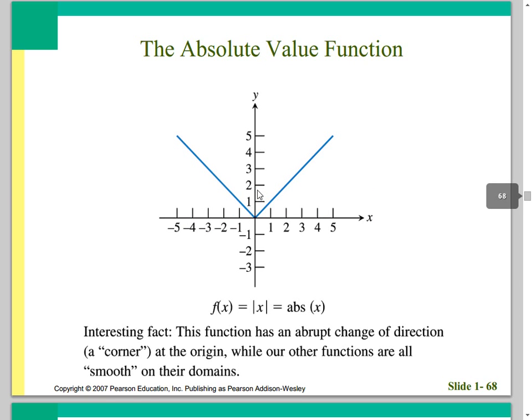The absolute value function — entered in the calculator as abs(x) — has an abrupt change of direction at the corner called a cusp. That occurs at the origin, while all other parent functions are smooth. We'll talk a lot about that in calculus.